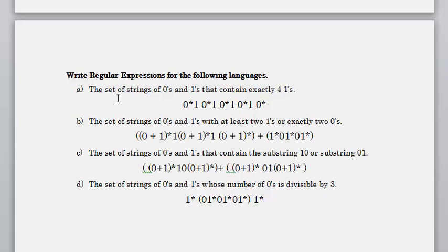For regular expression problems, a typical question format is: the set of strings of zeros and ones containing exactly four ones. We need exactly four ones — they don't have to be consecutive. So we place 0* at the beginning, end, and between each of the four ones. Another example: strings with at least two ones OR exactly two zeros — two separate conditions joined by OR.